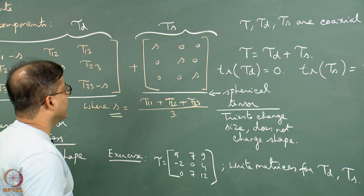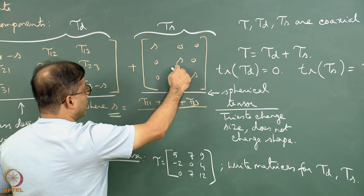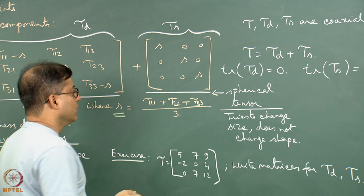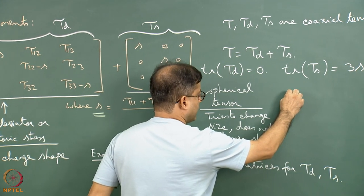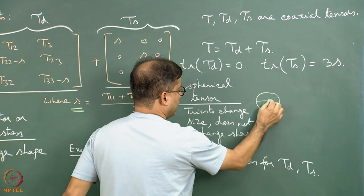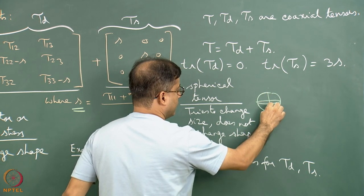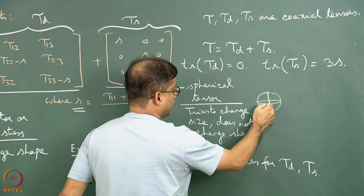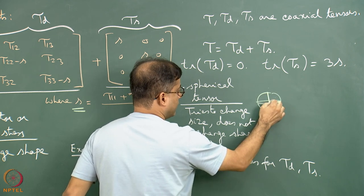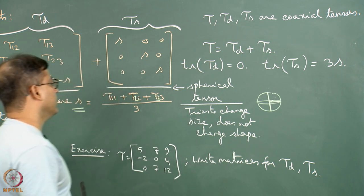Why do we call it spherical? Because equal amounts of stress act along three perpendicular axes. If I draw three axes of equal length in space, this indicates a sphere — one axis of some length, then another, and the third. That is why it is called a spherical tensor; it is not an ellipsoidal tensor.